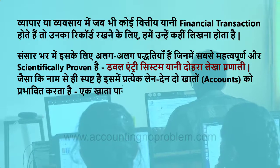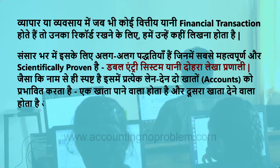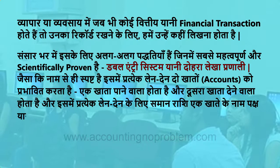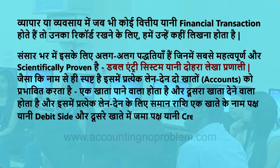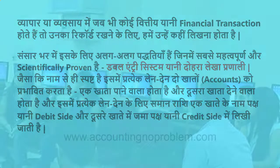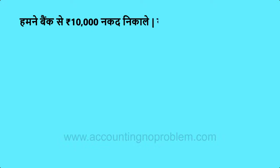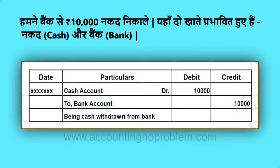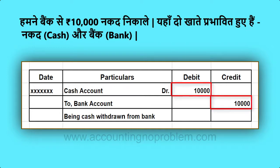जैसा कि नाम से ही स्पष्ट है, इसमें प्रत्येक लेनदेन दो खातों को प्रभावित करता है — एक खाता पाने वाला होता है और दूसरा खाता देने वाला होता है। प्रत्येक लेनदेन के लिए समान राशि एक खाते के नामपक्ष यानि Debit Side और दूसरे खाते में जमापक्ष यानि Credit Side में लिखी जाती है। जैसे हमने bank से 10,000 रुपए नकद निकाले — यहाँ दो खाते प्रभावित हुए: देने वाला bank account और पाने वाला cash account, और दोनों पक्षों में राशि समान है।